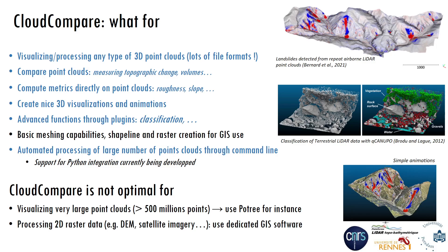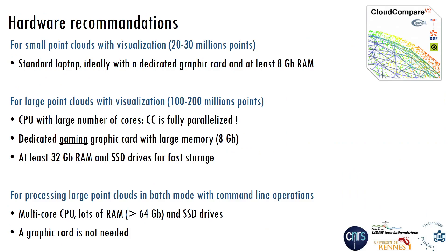Cloud Compare is not optimal for visualizing very large point clouds larger than 500 million points. In that case, it is better to use Potree, for instance. And if you want to process 2D raster data, such as DEMs or satellite imagery, it is definitely better to use dedicated GIS software.